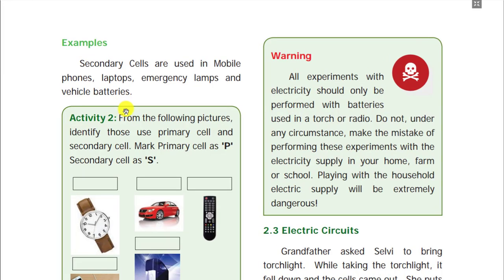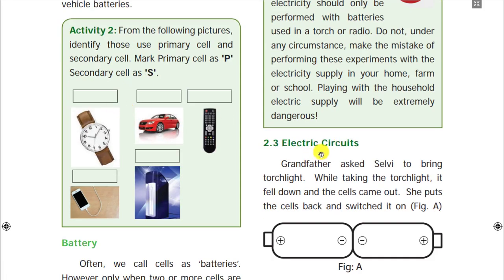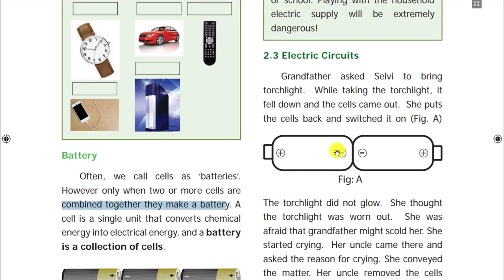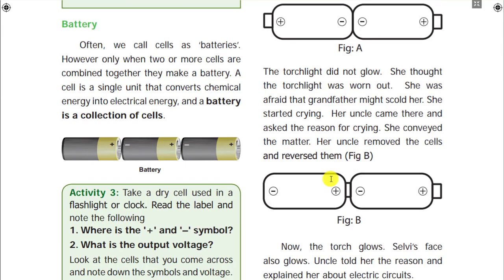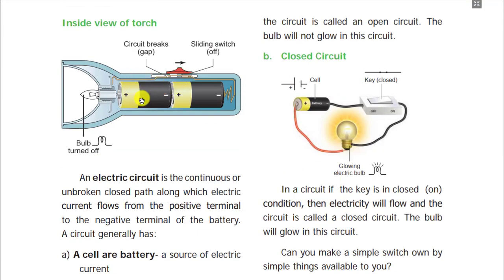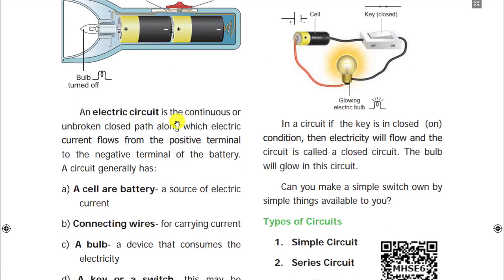Up to this we saw sources of electricity, batteries, and cells. Next we look at the electrical circuit. An electrical circuit means: when we switch on the switch, the light glows; when we switch on the switch, the fan runs. When you switch on, electricity flows — that is called an electric circuit. For example, in a torch light, if you put the batteries facing the wrong way the light will not glow. The positive end must connect to the negative — only then will electricity flow.